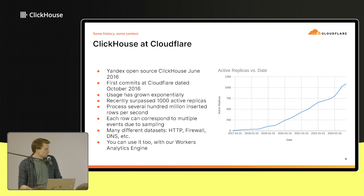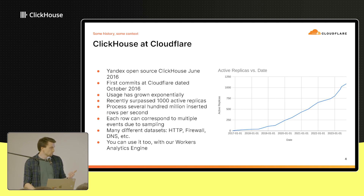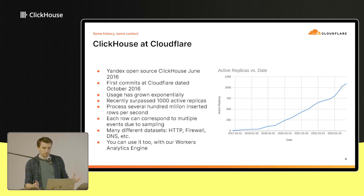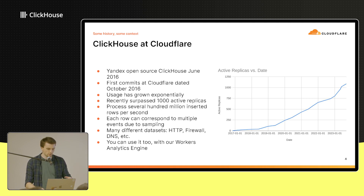Since then we've scaled up exponentially. This year we actually exceeded 1,000 active replicas, processing hundreds of millions of inserted rows every second — which corresponds to a significantly larger number of events because we've been using a lot of sampling. We have a few different datasets, for example, information about HTTP requests and DNS lookups. You can build on top of our data pipeline yourselves using Worker's Analytics Engine, which gets you everything out of the box.